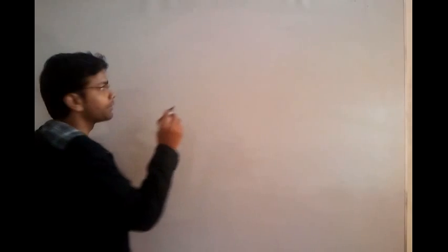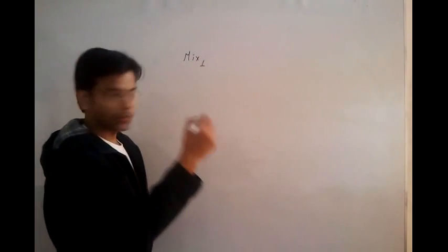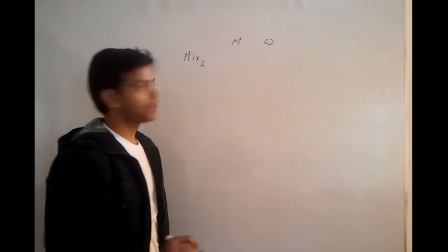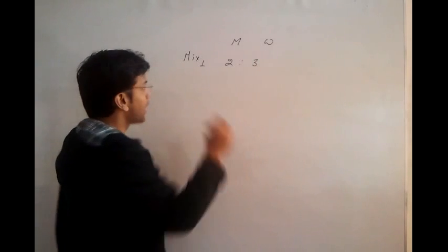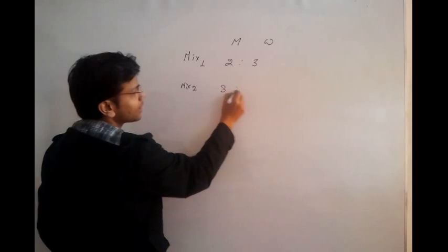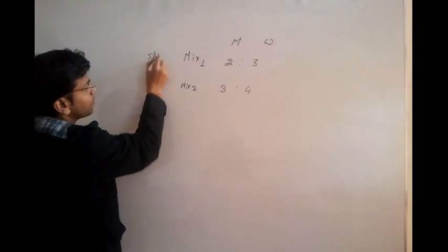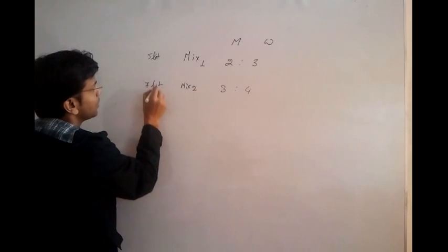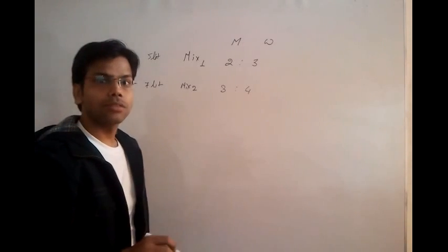The first one is: if you have a mixture given — like mixture 1, or solution 1, which has nothing but milk and water in the ratio of 2 to 3. And in another mixture, solution 2, which has milk and water in the ratio of 3 to 4. We take 5 litres of mixture 1 mixed with 7 litres of mixture 2. Then what would be the concentration of the new mixture?